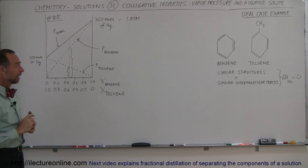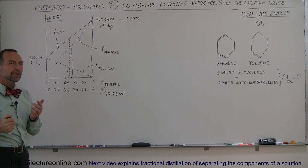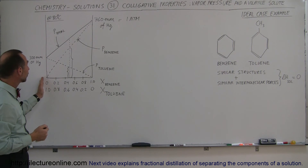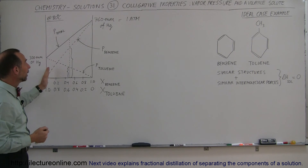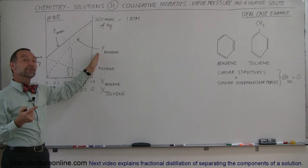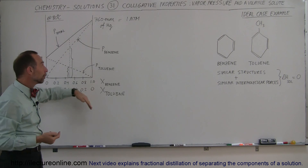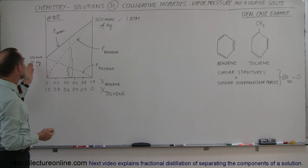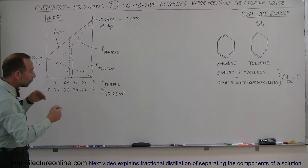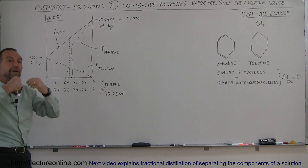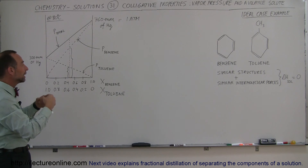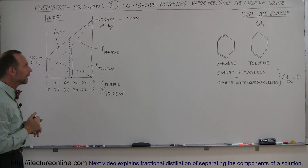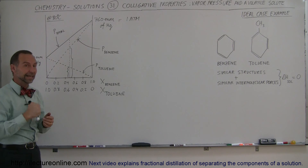An interesting point is that if you have a solution like this and you want to separate the two, you can increase the temperature above 80 degrees centigrade. The benzene will begin to boil and go into vapor form, while toluene will contribute some vapor but most of the vapor will be benzene. That's the way you can separate them — it's called fractional distillation.